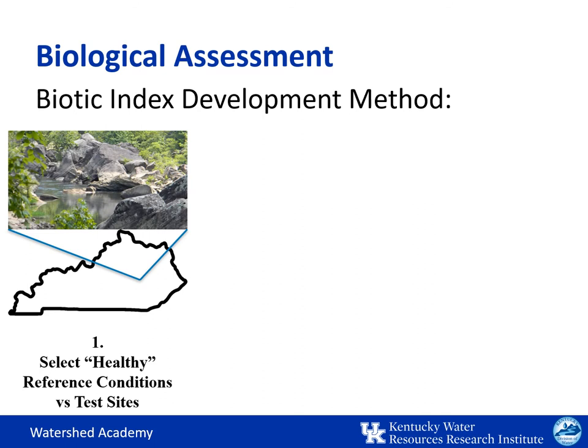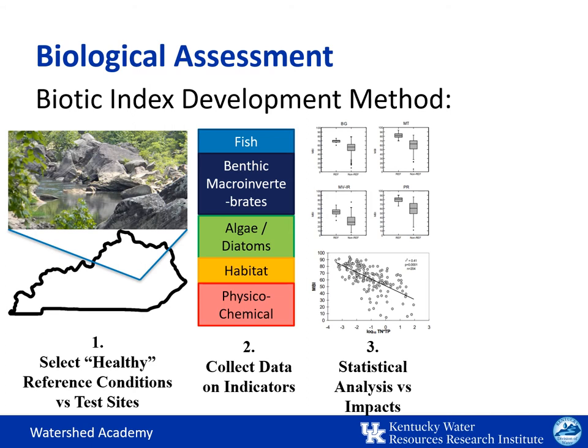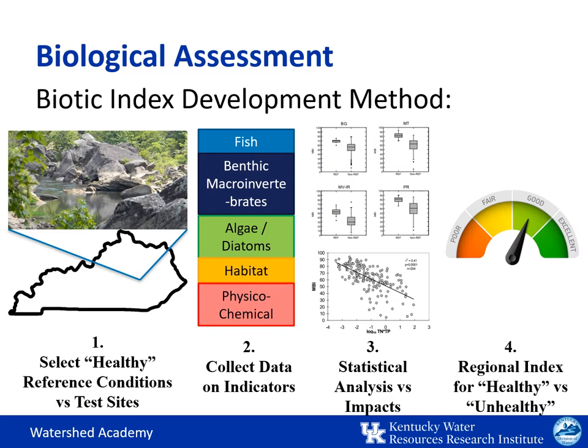A wide variety of parameters are collected at these reference sites as well as the streams of interest. Statistical analysis is then used to assess the different metrics — ways of looking at the biological data — to find the best predictors of different types of pollution impacts; some of these metrics are better in some areas of the state than others. These different metrics are calculated into an overall score that provides confidence that the results are statistically different from the least impacted reference reaches, allowing for the development of metric values for rating comparison streams and telling us whether an area is healthy versus unhealthy.